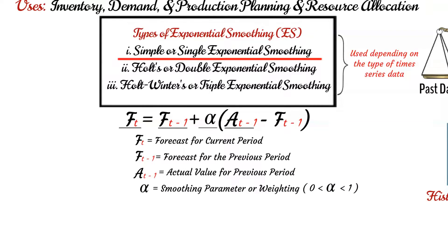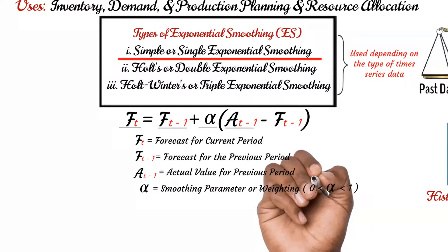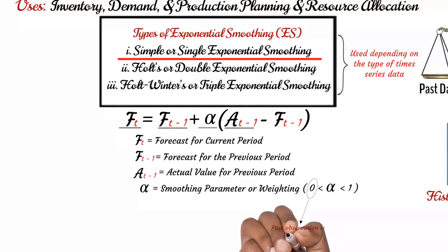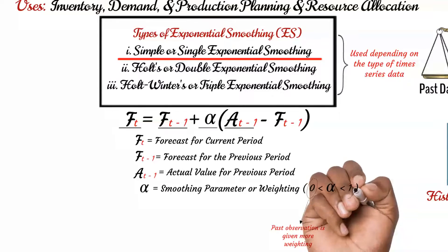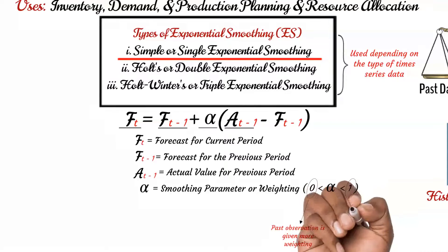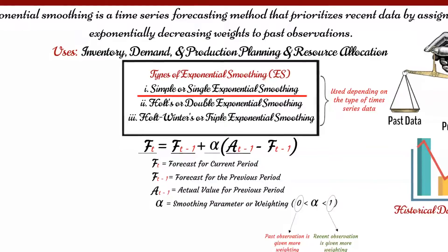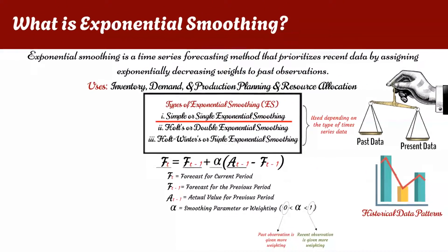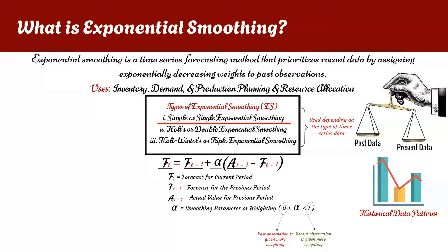The basic idea behind exponential smoothing is to give more importance to recent observations, while gradually diminishing the influence of older data. This is reflected by the value of alpha such that the closer the value of alpha to 0, the higher the influence of older data points. While the closer the alpha value is to 1, the stronger the influence of recent data points. Assigning the alpha weighting this way results in a smoother and more responsive forecast that adapts to changes in the underlying patterns of the data.